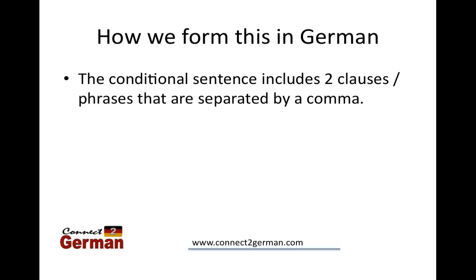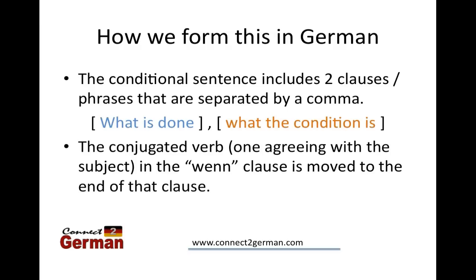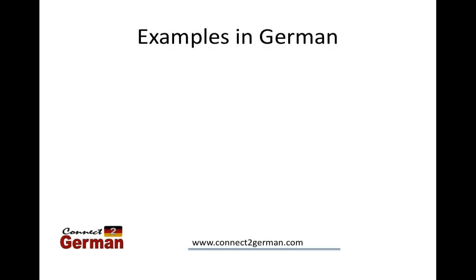So let's take a look at how we form this in German. Essentially what we're doing is taking two clauses and putting them together, joined by the word WENN and separated by a comma. The first clause is what is done — wearing shorts or drinking coffee, for example — and the second part includes the word WENN, which we call the WENN clause, and gives the condition: when or if something. One key thing unique to all subordinating conjunctions like WENN is that the conjugated verb in the WENN clause must be moved to the end of that clause. It still agrees with the subject, but it gets moved to the end.